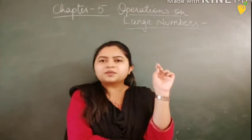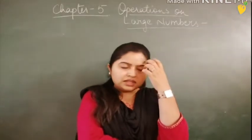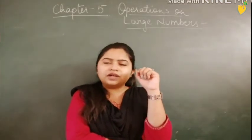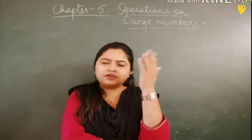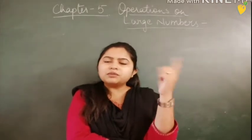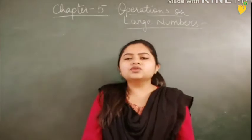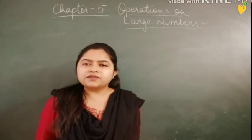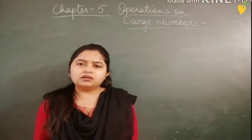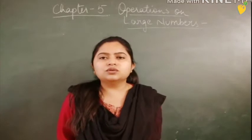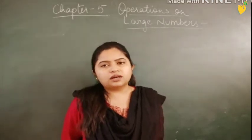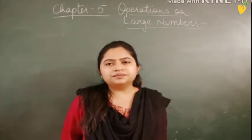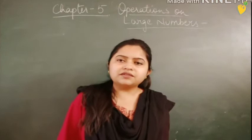First is addition and second one is subtraction on large numbers. We solved exercise 5.1, the first part only, from question number 1 to question number 16. Today I am going to explain the sums of the same exercise, from 17 to 21, the second part. Let's get started with the sums.